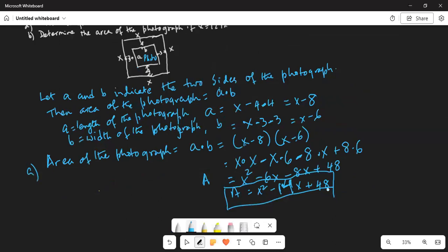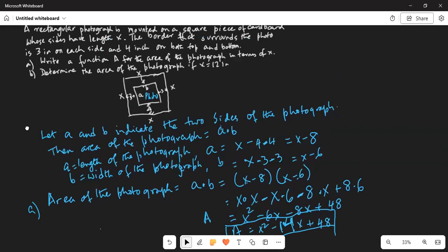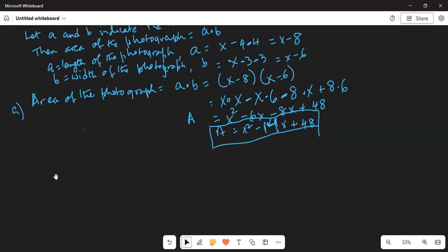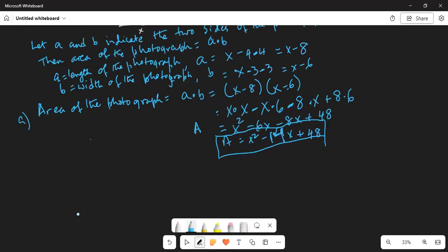Now in part b, they have given us, part b, determine the area of the photograph if x is 12 inches. So part b, area of the photograph a, if x is equal to 12 inches, so area is 12 squared minus 14 times 12 plus 48.